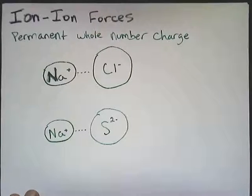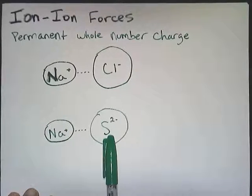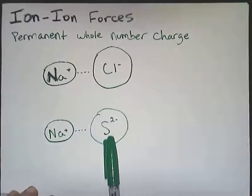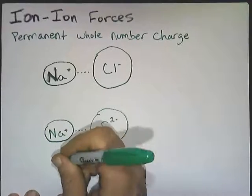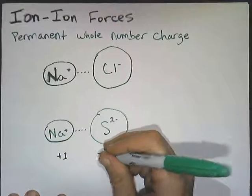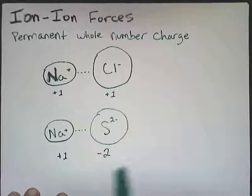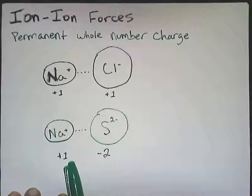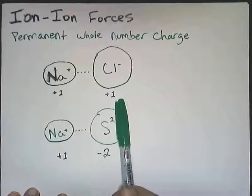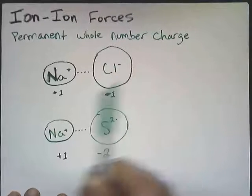You've thought about it for a second. The correct answer is the sodium and the sulfur interaction. Because we have a plus one charge here interacting with a minus two charge here versus plus one and plus one, well, this is going to be stronger. The plus two is going to pull onto that plus one much harder than a minus one pulls on this plus one.